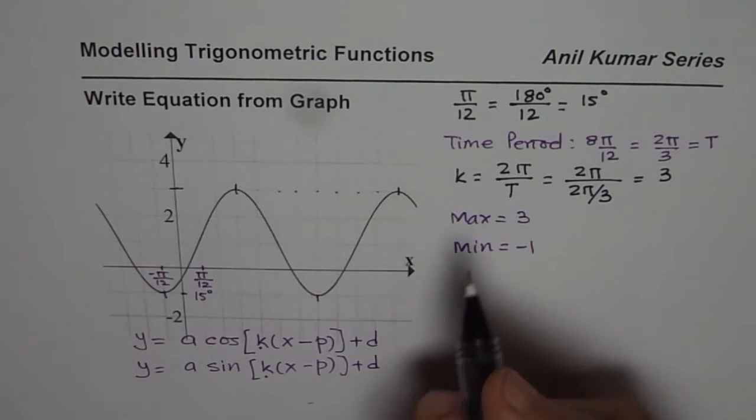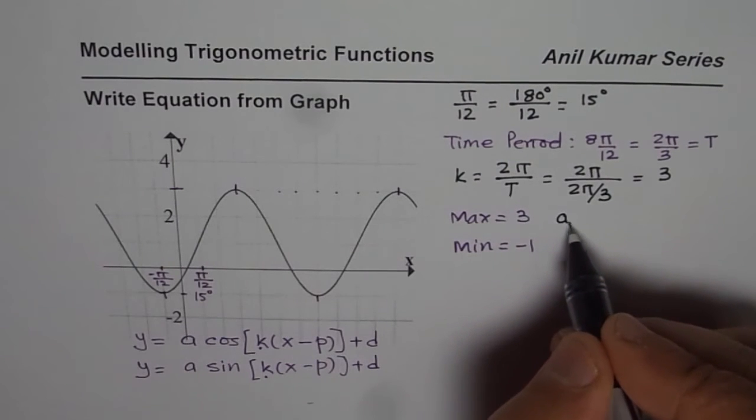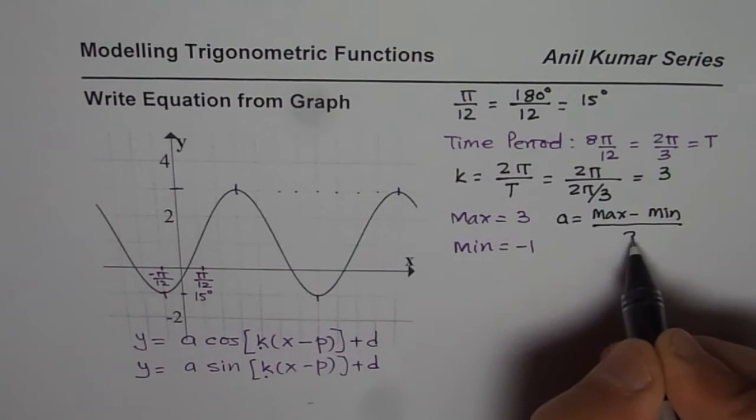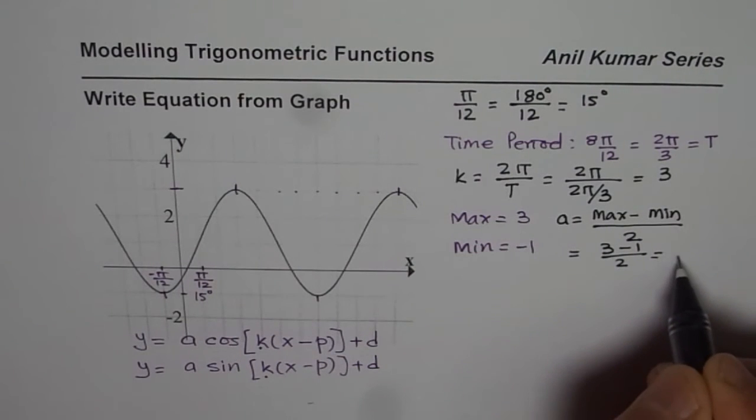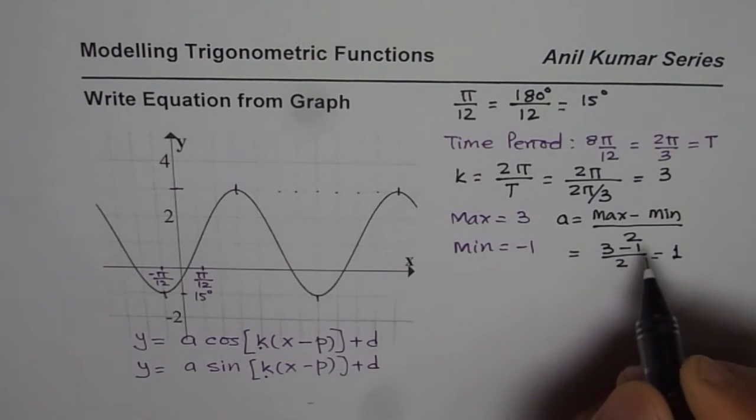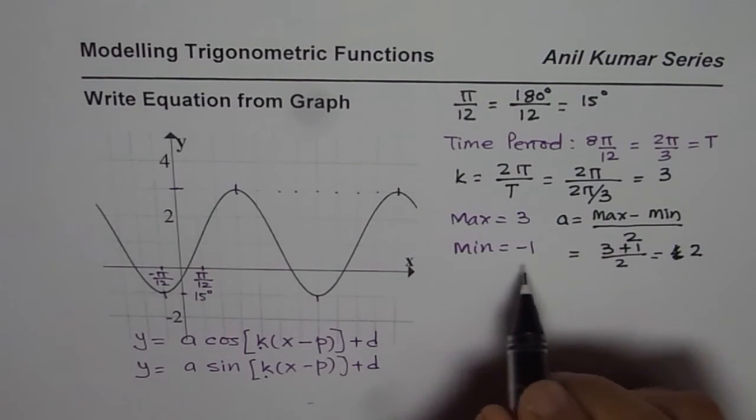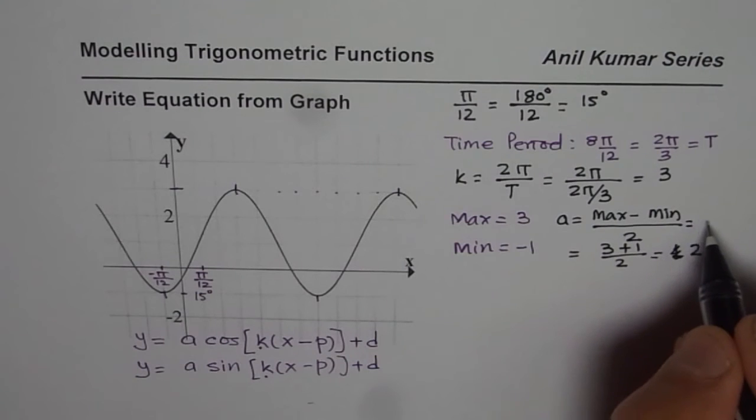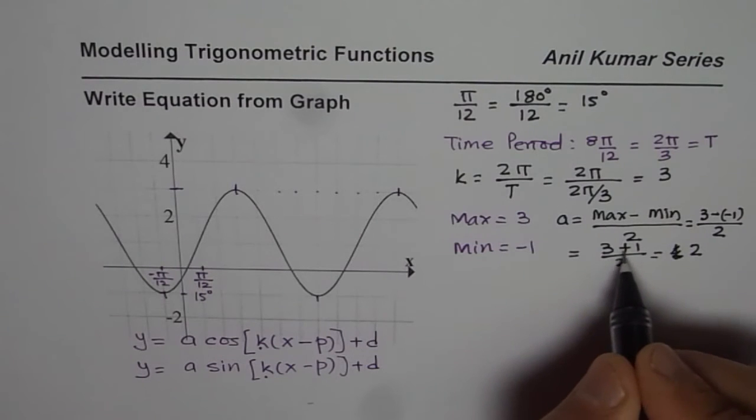Now from these values, a is difference of maximum minus minimum divided by 2. So a = (max - min)/2. Here it would be 3 minus -1 divided by 2. That minus minus becomes plus. So 3 minus -1 is 4, and 4 divided by 2 is 2.